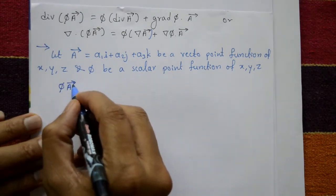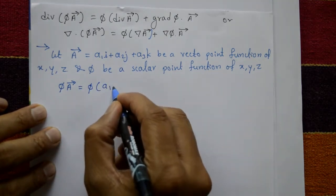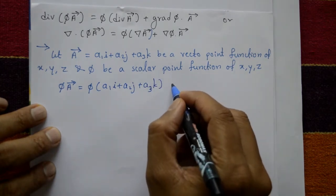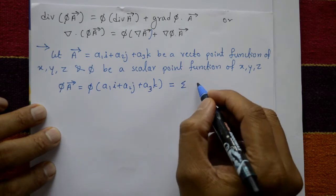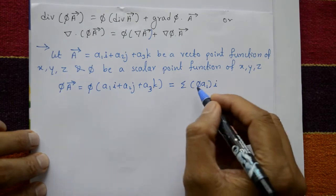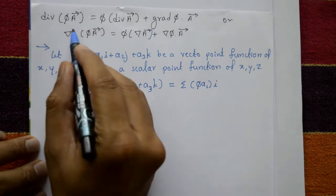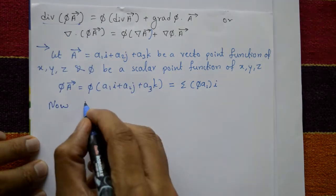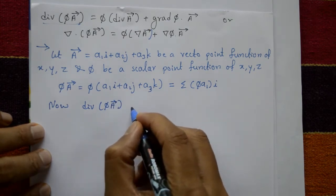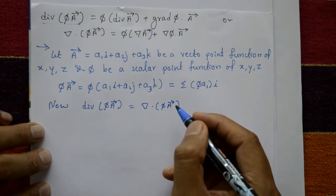First, φ**A** means φ times (A₁i + A₂j + A₃k), which can be written as summation of φ·Aₖ into the respective unit vectors i, j, k. Now we take the divergence of φ**A**, which equals del dot (φ**A**).